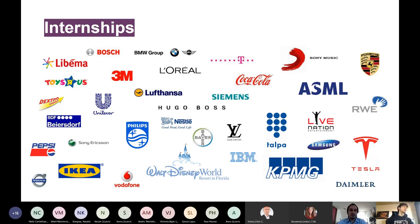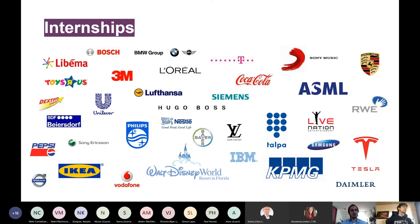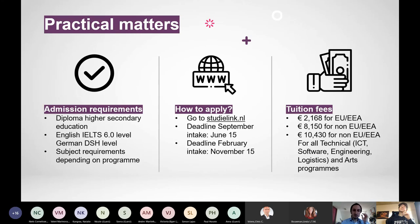Here are examples of companies where Fontys students have interned or worked: BMW, Unilever, PepsiCo, Volvo, Tesla, Daimler, Porsche, ASML, Siemens, Hugo Boss, Louis Vuitton, Walt Disney. Students also return to their home countries for internships at local companies, which helps build a network back home if that's where they want to work after graduation.